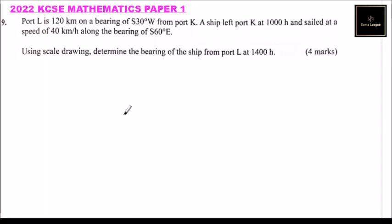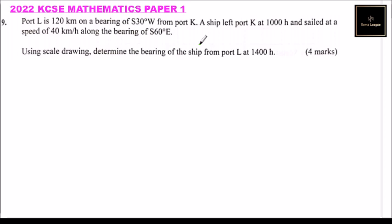Question number nine, 2022 Demand Six paper one. Port L is 120 kilometers on a bearing of South 30 degrees West from port K. A ship left port K at 10:00 hours and sailed at a speed of 40 kilometers per hour along a bearing of South 60 degrees East. Using a scale drawing, determine the bearing of the ship from port L at 14:00 hours.